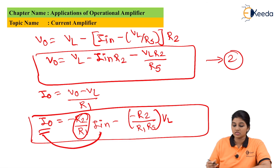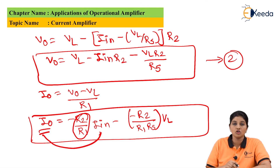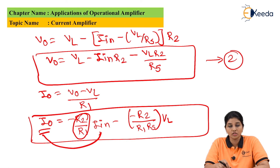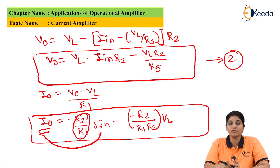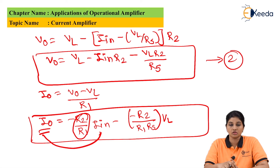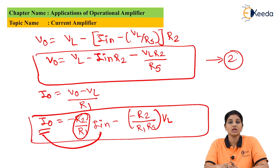So this is how current amplifiers can be implemented using two circuits: current amplifier with floating load and current amplifier with grounded load. This covers the current amplifier, its implementation, and analysis of the circuit. I hope you understand this topic. Thank you very much for watching this video. Stay tuned to Ikira, subscribe to Ikira.